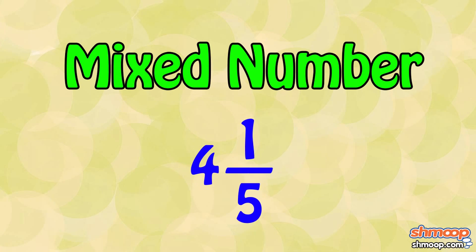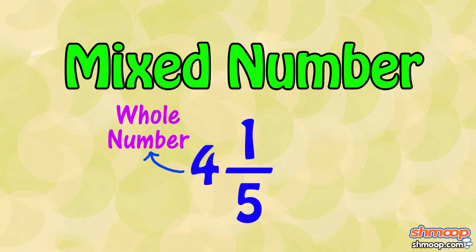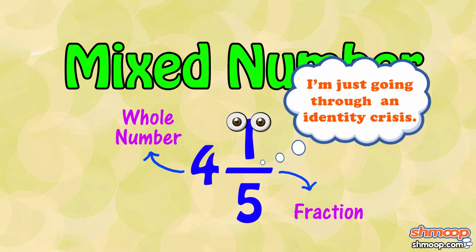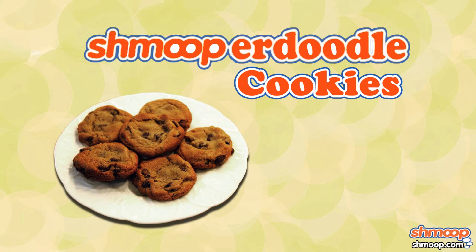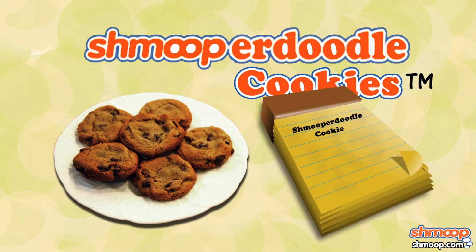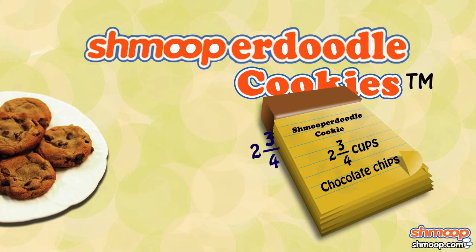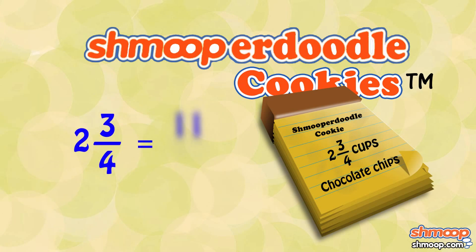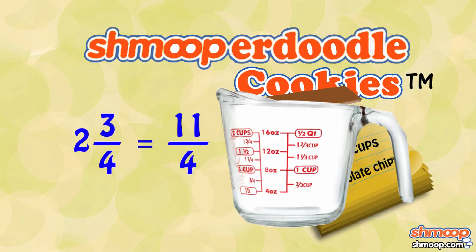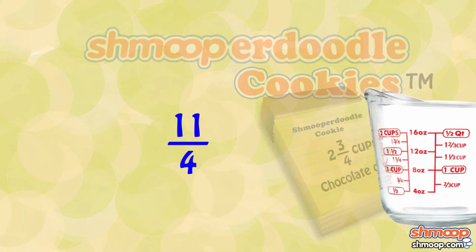A fraction may also appear in the form of a mixed number, which is a combination of a whole number and a fraction. For example, if you're baking Shmoopperdoodle Cookies, it asks for two and three-fourths cups of chocolate chips. It's the same as eleven-fourths, but there's probably not a level for that on your measuring cup.